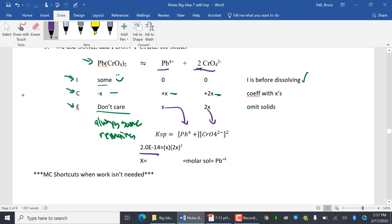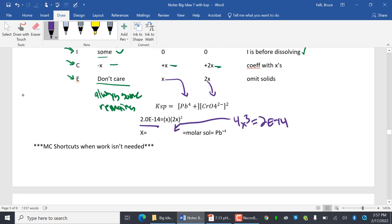And then, oops, I forgot my calculator, so I'm stuck with this. So what I get then is 4X cubed equals 2E-14. So your pod quiz question is going to be, what's that answer? Oh, solve for X. Yeah.